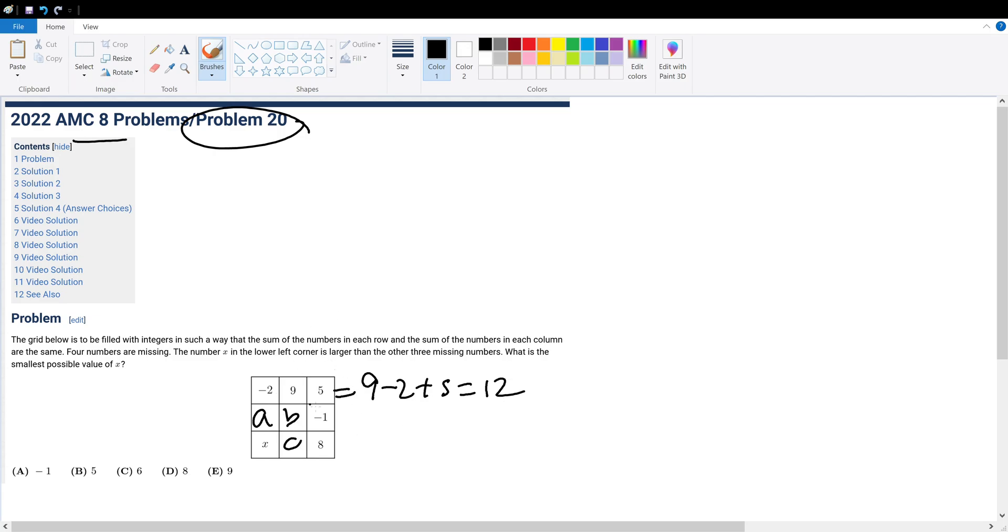Let's call this A, B, and C. So 9 plus B plus C, this one, equals 12. And we can see that negative 2 plus A plus X has to also equal 12.